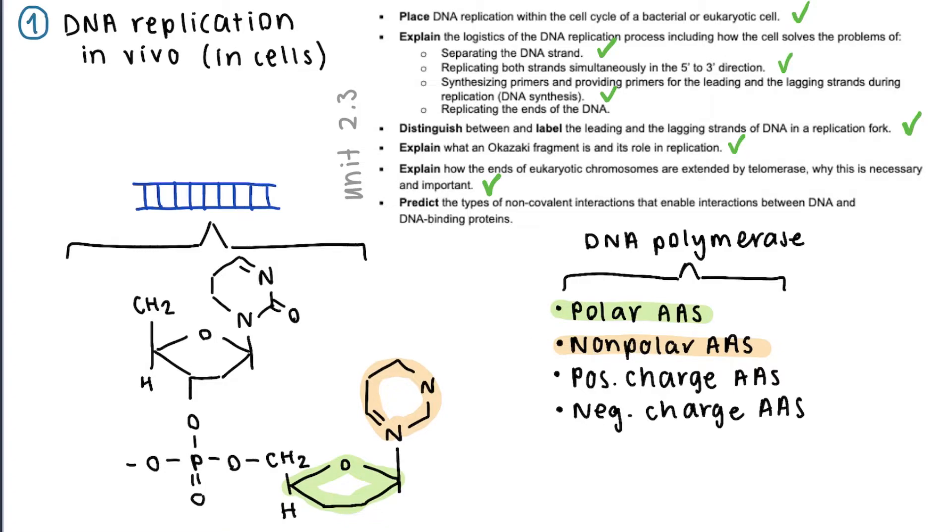Note that the bases can also form hydrogen bonds, since hydrogen bonds between them are what hold the double helix together. And we know that the phosphate group is ionic, since it has that negative charge on the oxygen on the left. So with a positively charged amino acid, it could form an ion-ion bond.